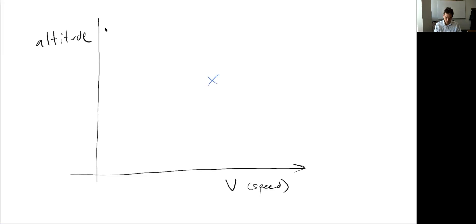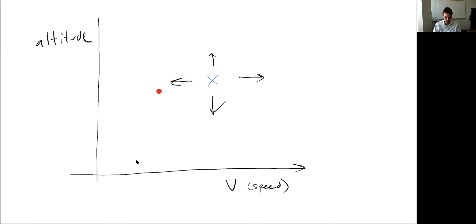Think about going in different directions on this plot. What prevents going really far to the right, really far to the left, or really far up? What are the physical limitations that create bounds on my flight envelope? Pause and give that some thought. Starting with the low end — something we've discussed quite a bit — as I go slower and slower, stall is what prevents me from going all the way to zero speed.